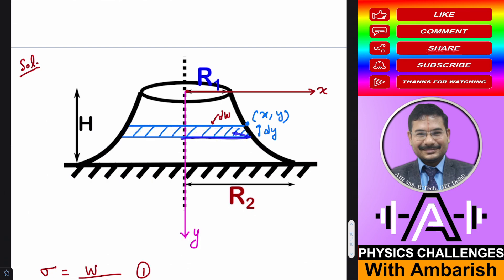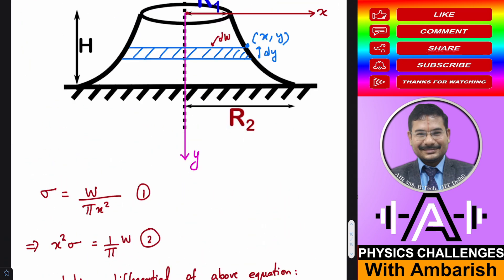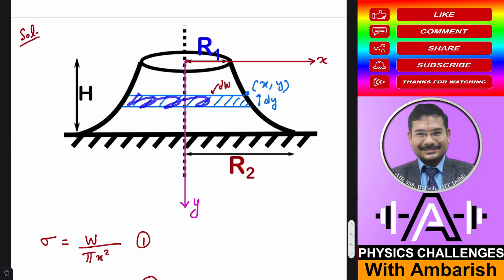this base area will be π x² and dy. So additional weight is π x² dy into density of course and density into g. So π x² dy ρg, that's the additional weight